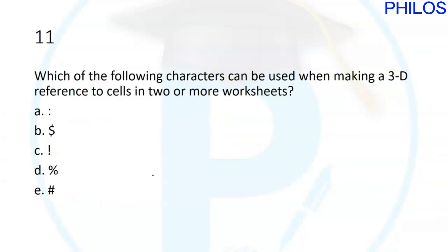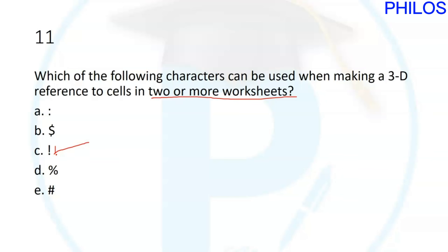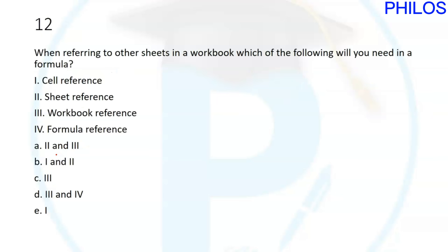Question eleven: which character can be used when making a 3D reference to cells in two or more worksheets? We just used it — it's the exclamation sign (!) placed after the sheet reference, for example Sheet4!. The correct answer to question eleven is C.